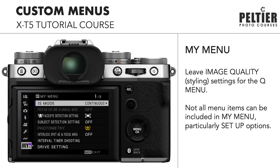What do you include in My Menu? It's going to take a little while to figure out which settings you use the most. What I would not include are the image styling settings — things like film simulation, highlight tone, shadow tone. I prefer to keep all of those in the Q menu, which is my image styling menu. My Menu is for all of the other menu options. I'll have some recommendations in the text outline, but just use the camera, spend some time with it, figure out which settings you most often change, and then include those in My Menu.